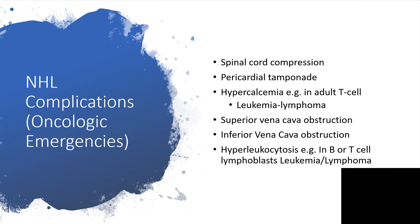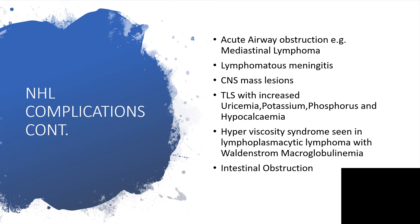Tumor lysis syndrome is also a possibility. You will have hyperkalemia, hyperphosphatemia, hyperuricemia — because nucleic acids from DNA are being broken down — and hypocalcemia. These require acute emergency interventions to correct electrolytes. Other complications include acute airway obstruction, particularly with mediastinal lymphoma, lymphomatous meningitis, and cranial nerve mass lesions with signs of increased intracranial pressure.